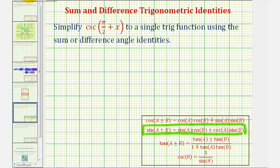So again, if we're given cosecant of pi divided by two plus x, we could write this as one divided by sine of the quantity pi divided by two plus x.